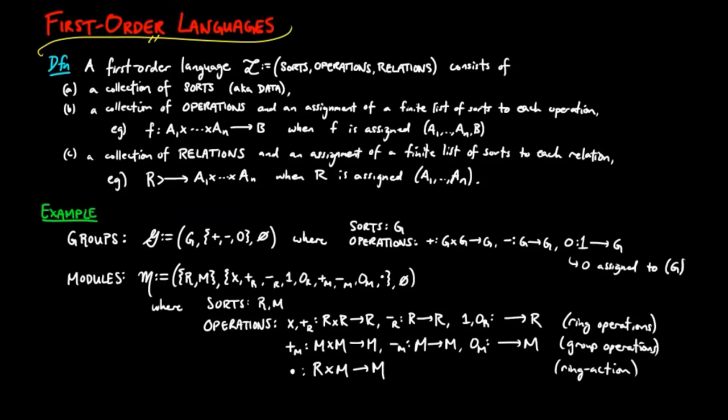We will later show that these are examples of algebraic signatures. Note that a signature is just the data and structure, and we have not given any properties, in other words, the axioms yet.